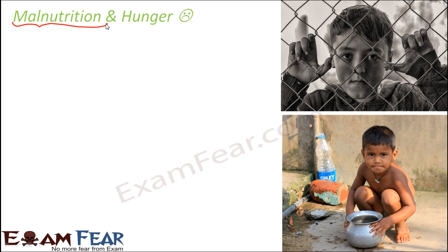Why are there still people who cannot afford food? There are many reasons. One of the causes is poverty — people do not have money to buy food. Whether we talk about cereals, pulses, oil, meat, eggs, or fish, for everything you need money. Unless you already own a huge stretch of land where you have planted everything, you will not suffer from malnutrition.